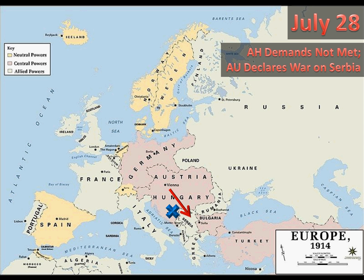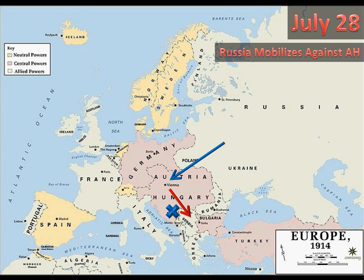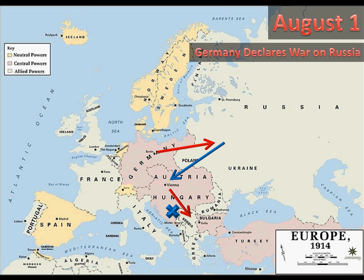At the time, Russia viewed Serbia as a sort of protectorate — a place they sympathized with — and they knew that Serbia was a very weak country, especially in comparison to the strong Austrian-Hungarian Empire. So Russia, upon hearing that Austria-Hungary was declaring war on Serbia, also mobilized against Austria-Hungary on the same day. A few days after that, on August 1, Germany declared war on Russia. Germany had an alliance with Austria-Hungary, so Germany was making good on that alliance and attacking Russia in response.